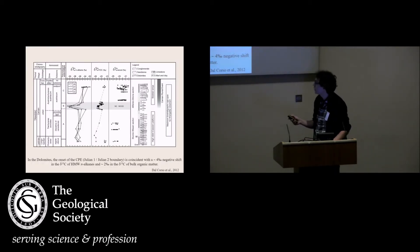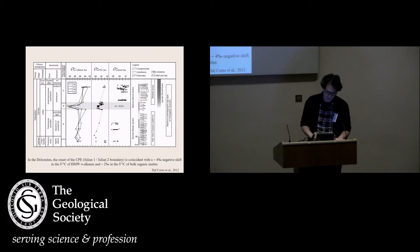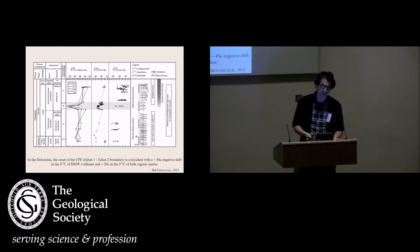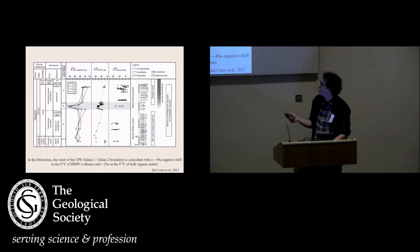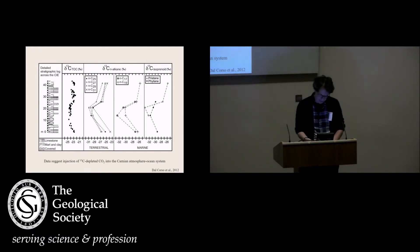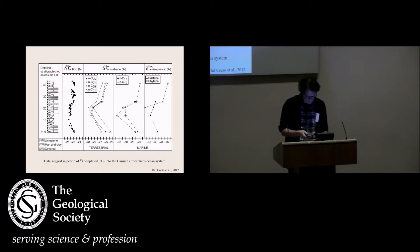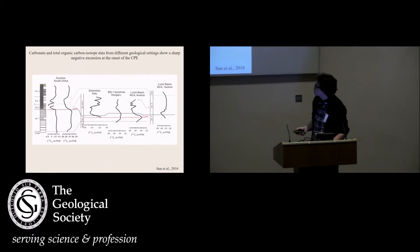We also have palynological evidence of climate change, with high-diversity palynological assemblages at the onset of the Carnian Pluvial Episode. A negative carbon isotope excursion was found at the so-called Julian-1/Julian-2 boundary, recorded by bulk organic carbon and also by biomarkers — long-chain and short-chain alkanes and isoprenoid lipids from marine algae — all recording the same signal.